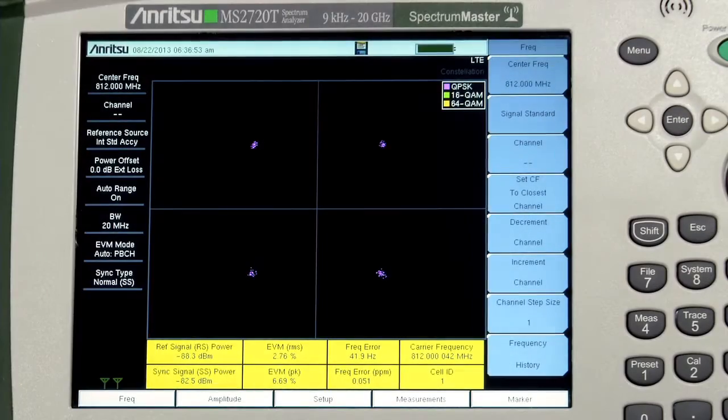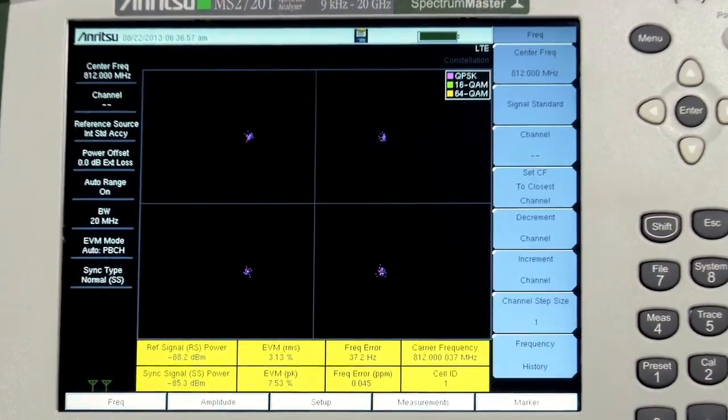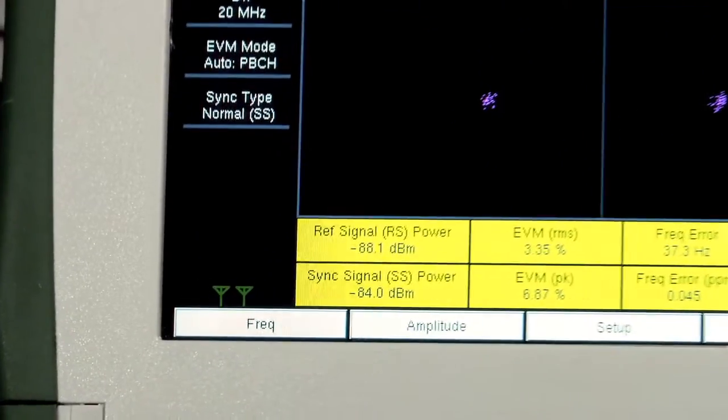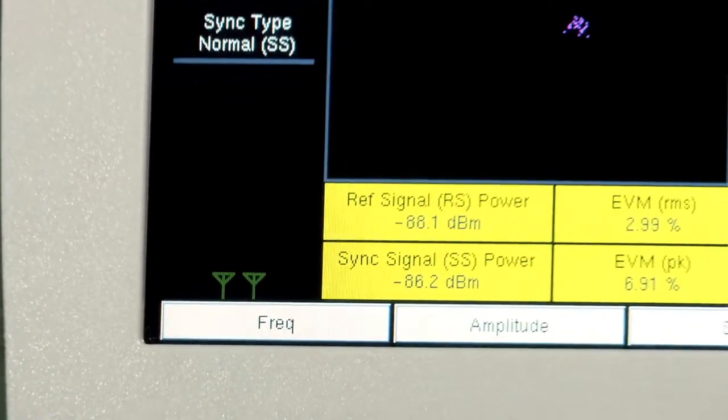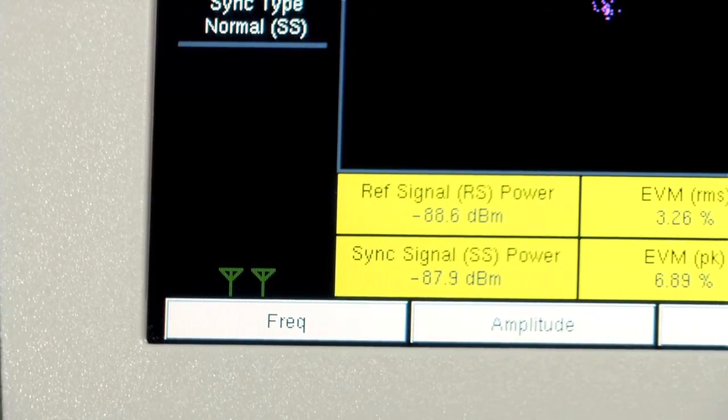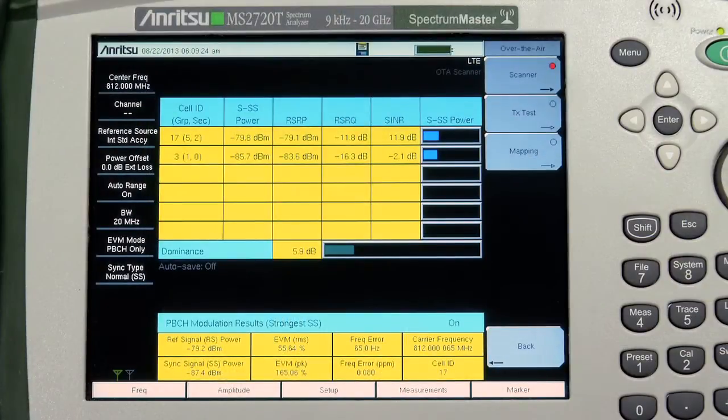The LTE options available for Anritsu's handheld analyzers measure the Physical Broadcast Channel, or PBCH, under MIMO conditions. MIMO signals are automatically detected and the Modulation Quality Measurement, or EVM, switches to the PBCH. However, there are some practical considerations.